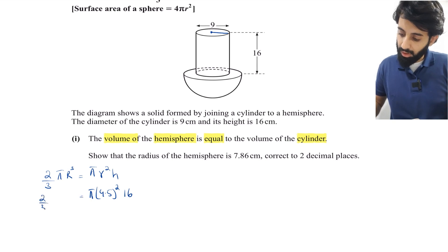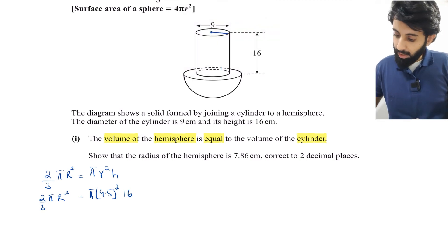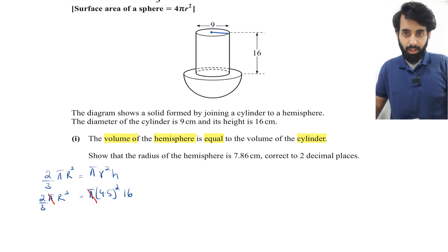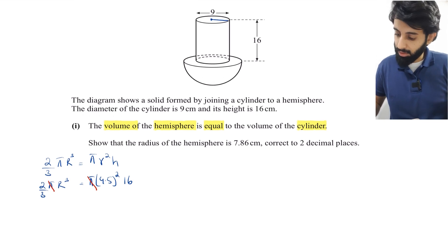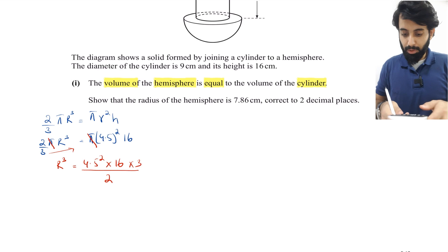Let's see if there's something we can cancel. We can cancel π from both sides. At this point, R³ equals 4.5² × 16 × 3 ÷ 2. That's exactly what I'm going to do in my calculator. 4.5 squared times 16 times 3 divided by 2.